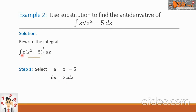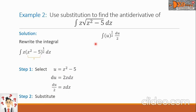Considering the integral, we have z dz, but du equals 2z dz. To eliminate the constant 2, divide by 2: du over 2 equals z dz. Step 2: substitute the values. The quantity z squared minus 5 becomes u, raised to 1 half, and z dz is replaced by du over 2. The constant 2 in the denominator moves outside the integral: 1 half times the integral of u raised to 1 half, du.